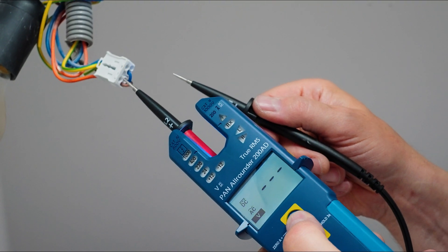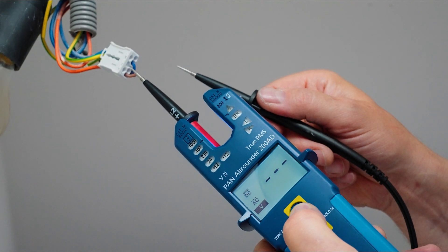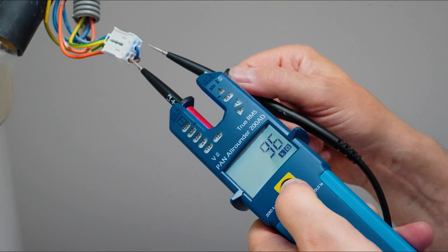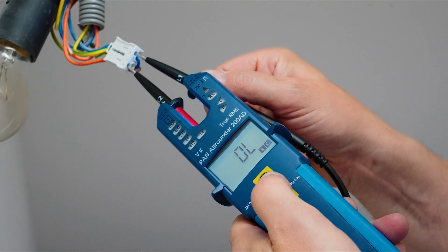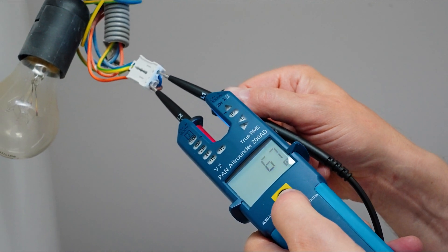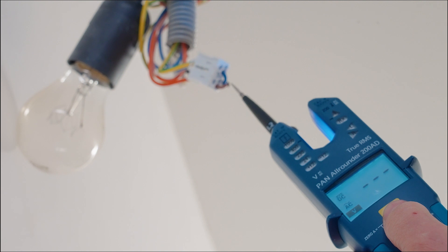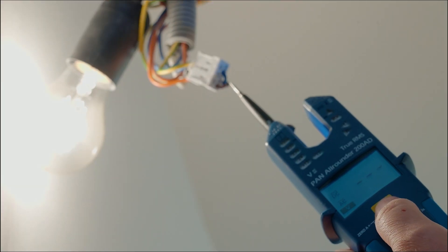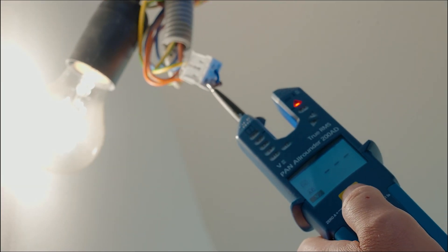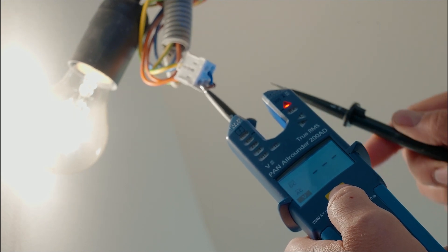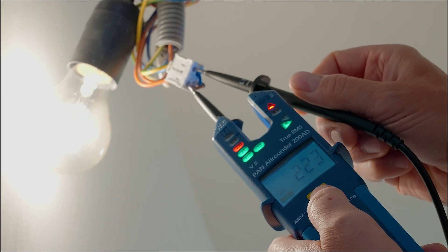Pressing the operating button three times activates the resistance measurement. After switching on the lamp, there is voltage present at the terminal. One single test tip checks the phase, with the second test tip we measure the voltage.